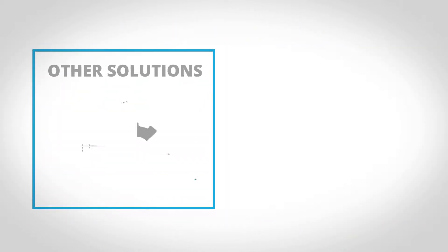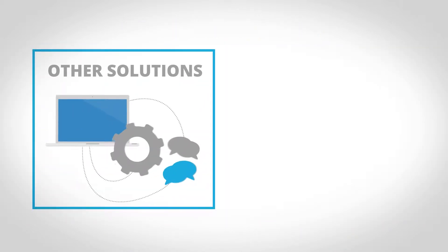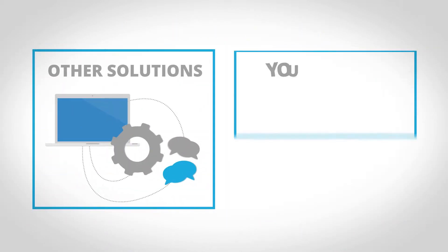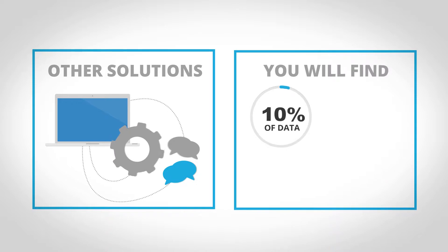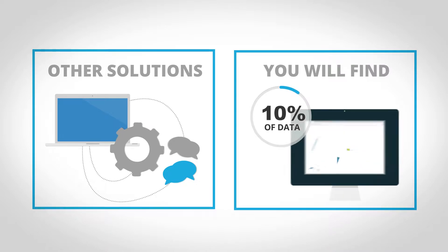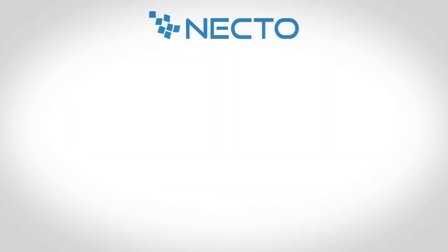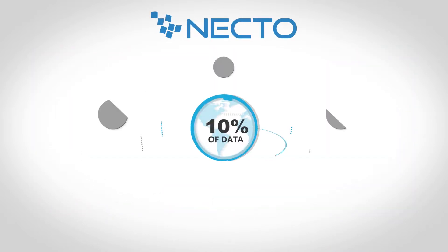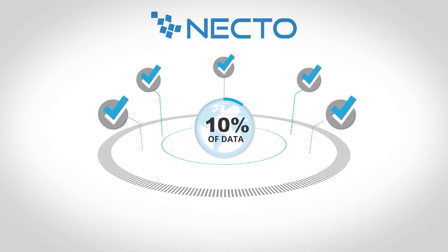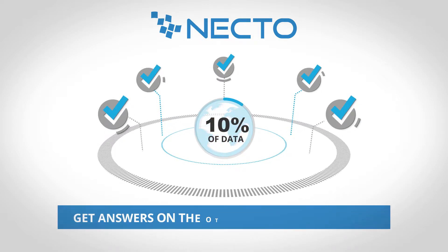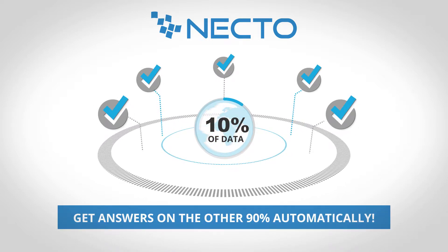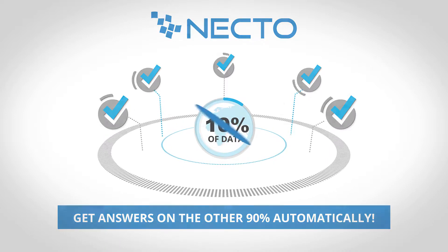Other solutions tell you to ask questions and get answers, which you will find in the 10% of data you know how to analyze. At Necto, on the other hand, we tell you to get answers to your questions in that 10% of data and get answers you didn't ask on the other 90% automatically.